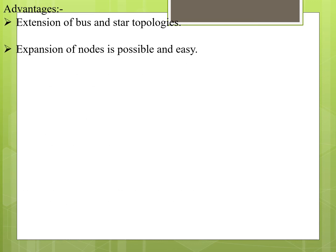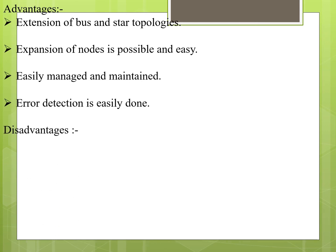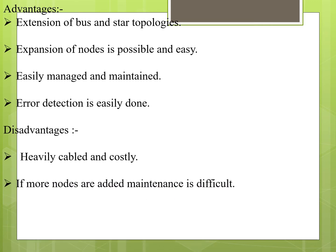Tree topology is an extension of bus and star topology. Expansion of nodes is possible and easy — you can add more hubs to the primary hub and more computers to the secondary hub. It is easily managed and maintained, and error detection is easily done. Disadvantages include heavy cabling and high cost. If more nodes are added, maintenance becomes difficult. If the central hub fails, the network fails.